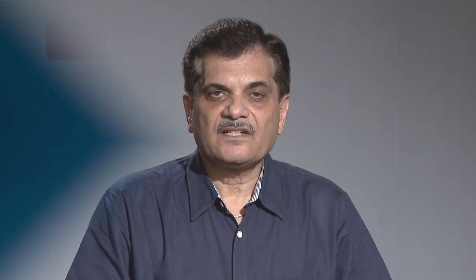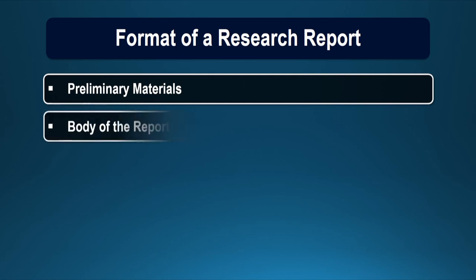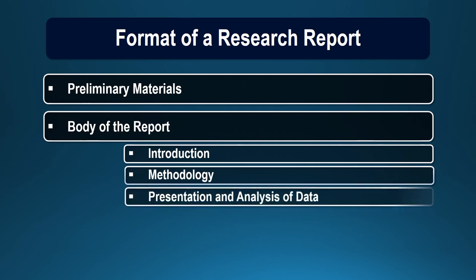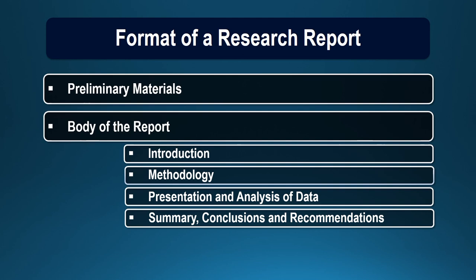Whether you write an evaluation report, an institutional report, or a journal report, the format would remain the same. However, the approach can be different. There are three sections in a research report: the first section contains the preliminary material, the second section contains the body of the report, which may include the introduction, the methodology, presentation and analysis of data, summary, conclusion and recommendation, and the last section contains the reference material.